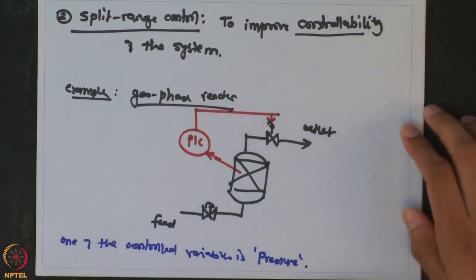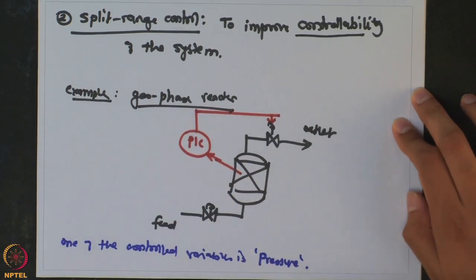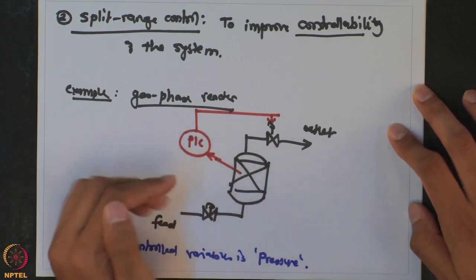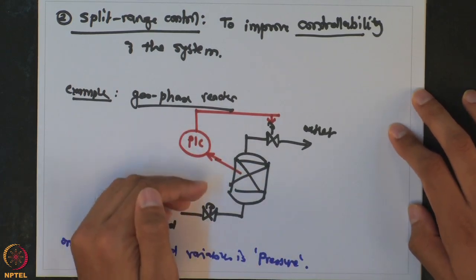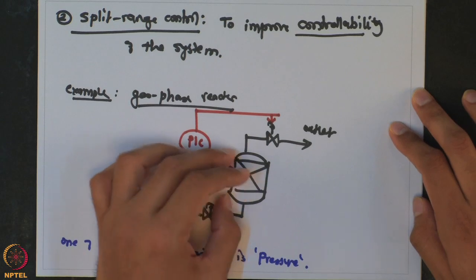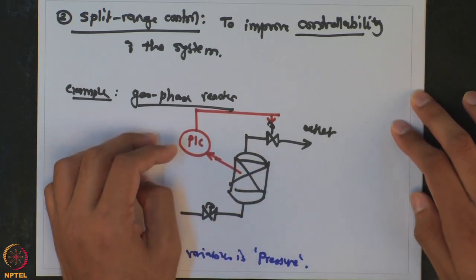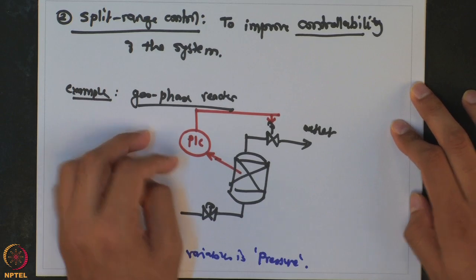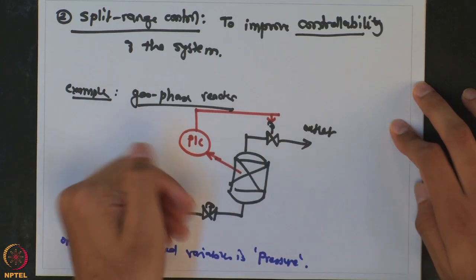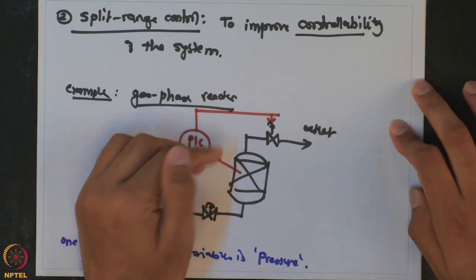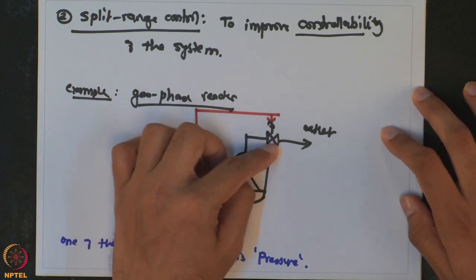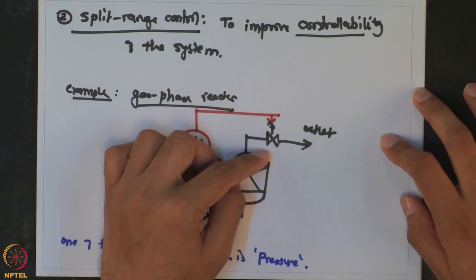Under normal circumstances, this is how the pressure controller works. If the pressure goes slightly above the set point, the outlet valve opens. If the pressure drops, you close the outlet valve to maintain vapor inventory inside the reactor. Now consider an abnormal situation where reactions are going into a runaway, generating a lot of vapor and causing pressure to keep increasing. As pressure increases, you open the outlet valve, but there is a limit — it can only open completely.